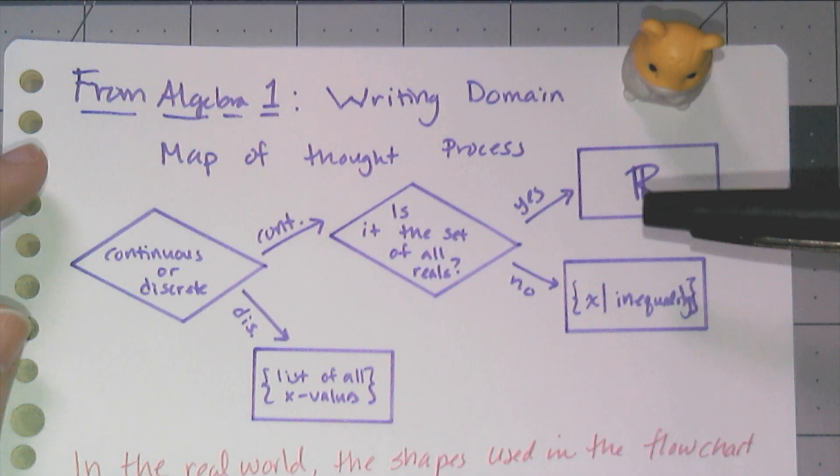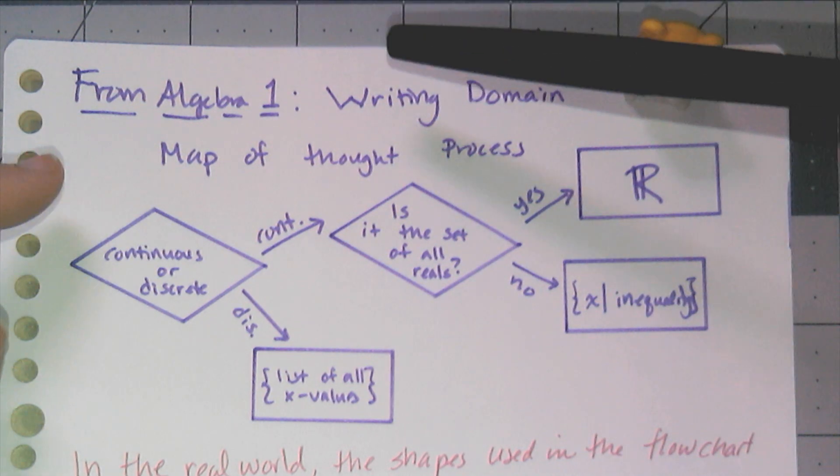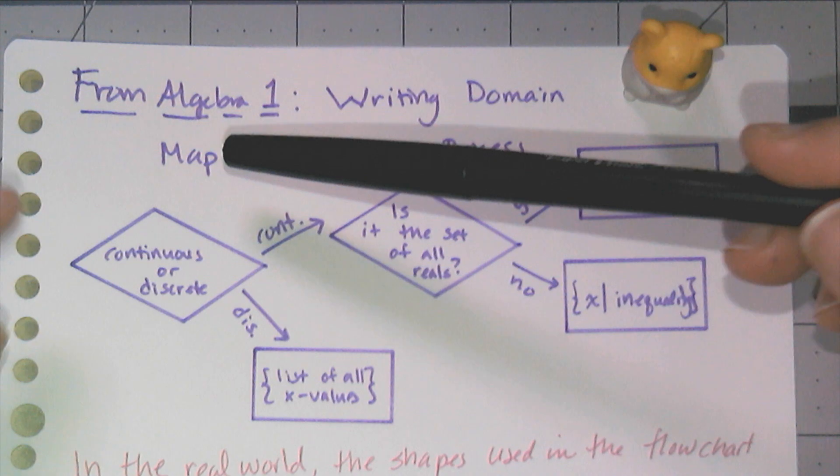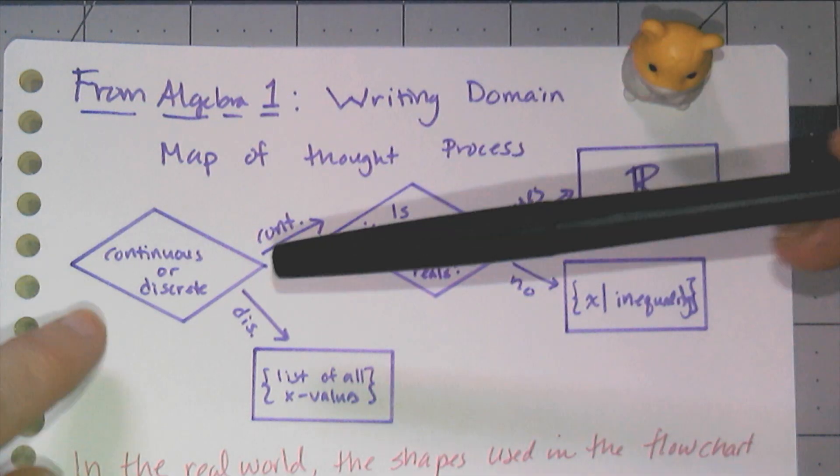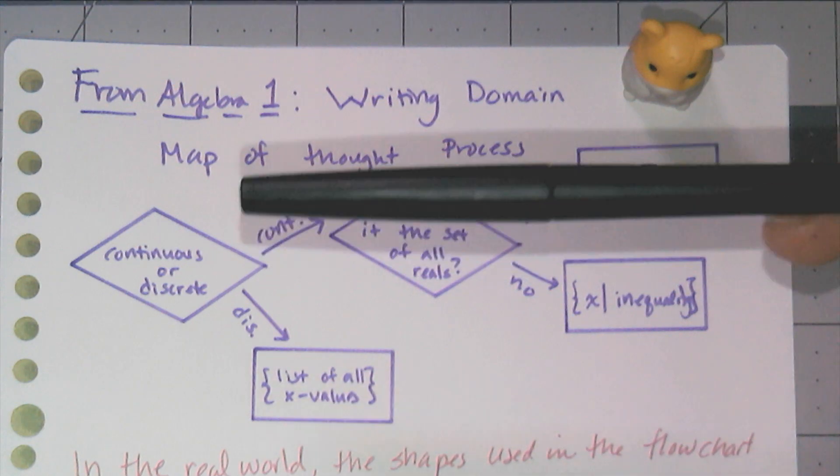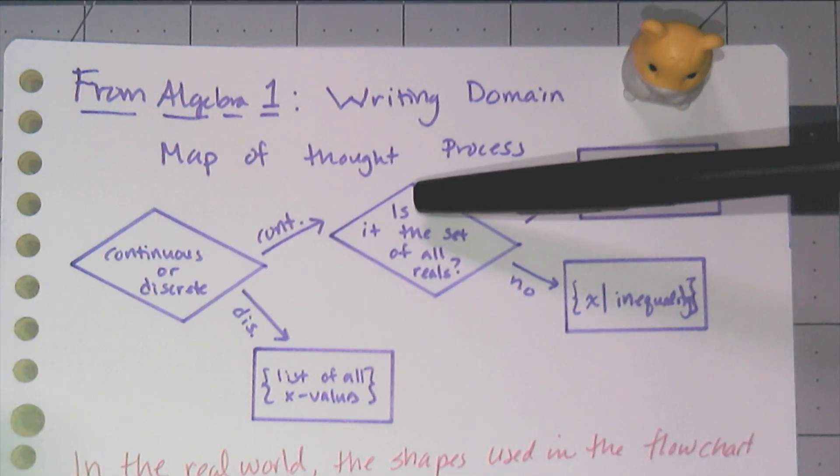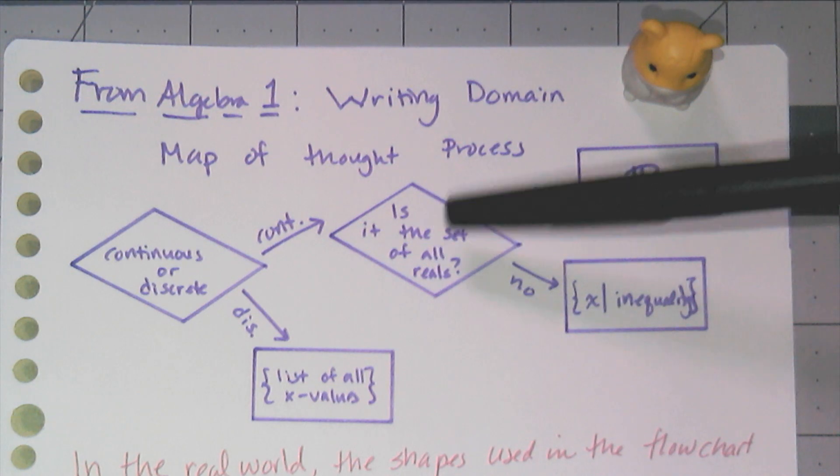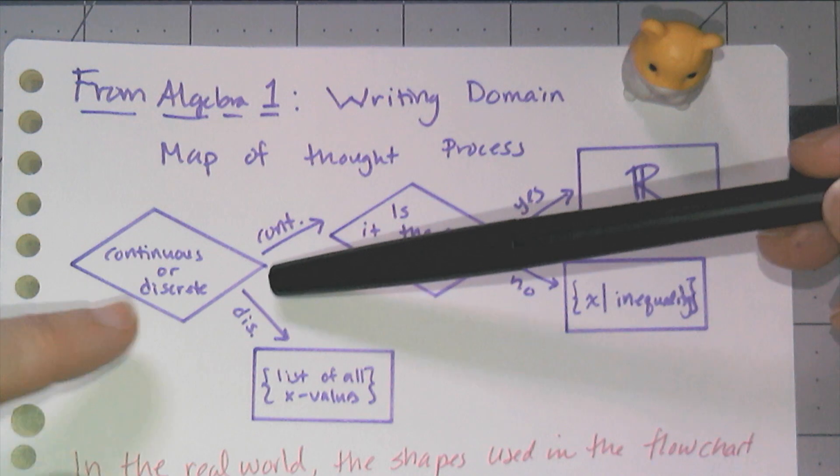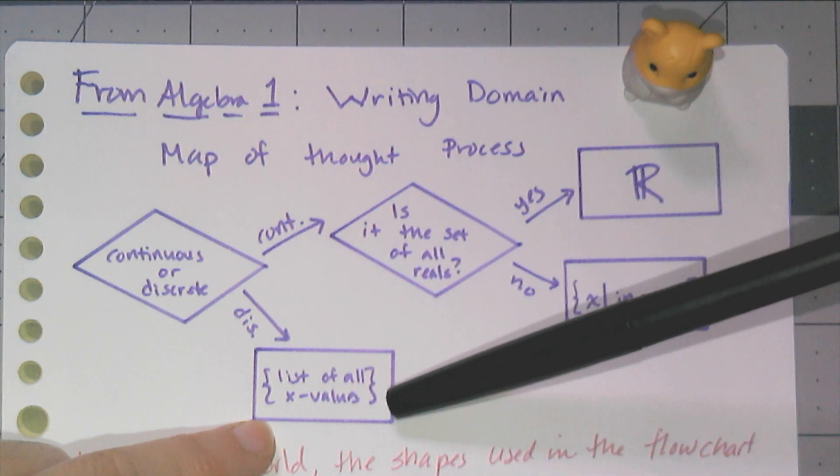Here is an example of a flowchart from algebra one. And I've chosen the process of writing out the domain. This is a map of the thought process. So the first thing you have to do is ask yourself, do I have a continuous or discrete data set? And then if it's continuous, you ask, well, is it the set of all real numbers? And if it's yes, you write down this, right? If it's discrete, then you just list out all the x values in a set of curly braces.